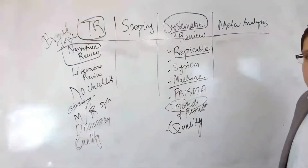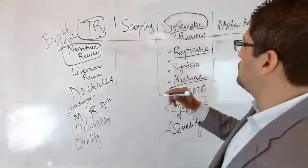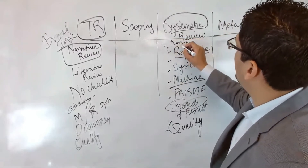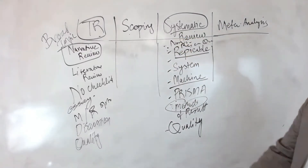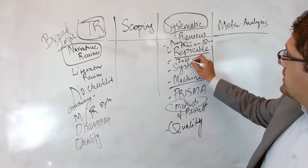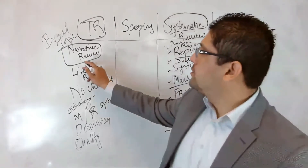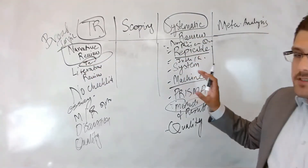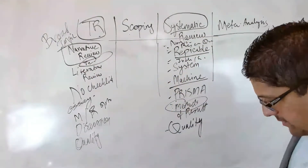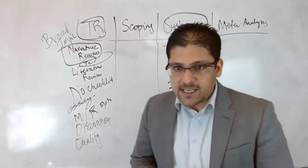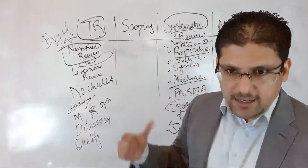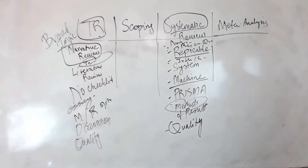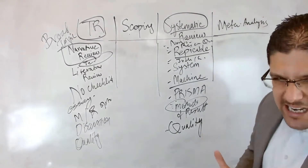A traditional review covers a broad topic and usually does not have a strict research question — the topic itself acts as the question. A systematic review has a narrow topic and answers a specific research question. A systematic review also requires a robust inclusion and exclusion criteria, specifying what kinds of studies to keep and what kinds to exclude, whereas in a traditional review this is optional.